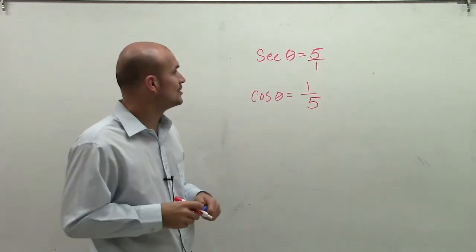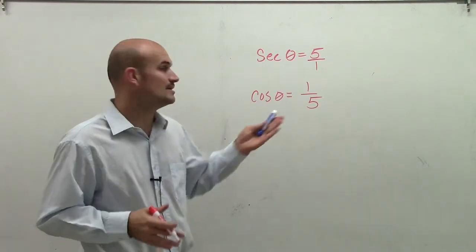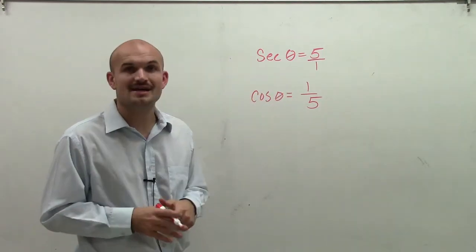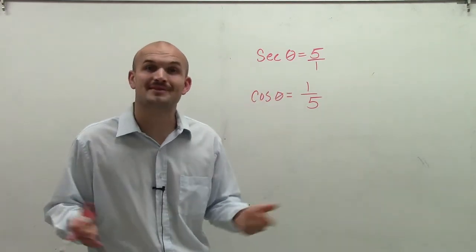Therefore, when given the secant of theta equals 5, we can rewrite that as a fraction and then take the reciprocal to find the cosine of theta, which is 1 over 5. There you go.